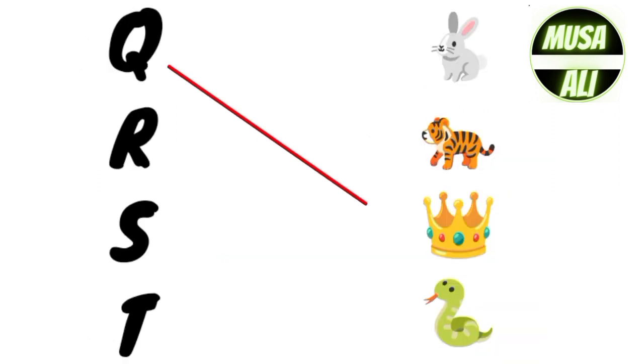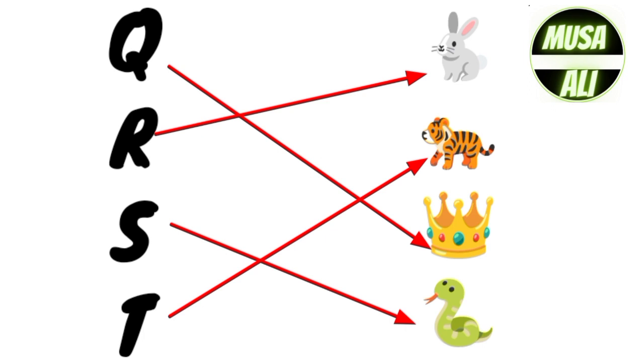Q for Coin, R for Rabbit, S for Snake, T for Tiger.